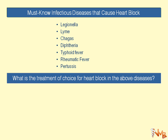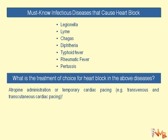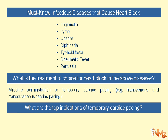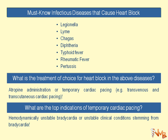The treatment of choice for heart block in these diseases: remember your role as a physician is to first diagnose and then treat. Atropine administration is helpful. We can also provide temporary cardiac pacing — for instance, transvenous and transcutaneous cardiac pacing. The top indication for temporary cardiac pacing is hemodynamically unstable bradycardia or unstable clinical conditions stemming from bradycardia.